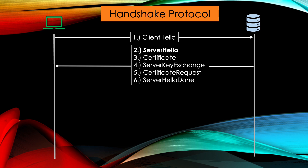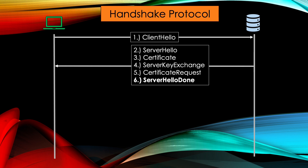The SERVER HELLO contains the chosen cipher, the session ID, and also a random number. Next, usually the server sends his certificate alongside the certification hierarchy. This way, the client can authenticate the server. If it is not possible to encrypt the secret values with the server's certificate, the server can circumvent this by using SERVER KEY EXCHANGE. It contains either the public RSA key or a Diffie-Hellman parameter to send the pre-master secret. If the server also wishes to authenticate a client, which is by no means standard, he can request the client's certificate. If all is done, the server concludes by sending SERVER HELLO DONE.